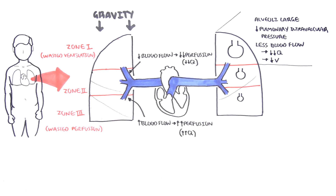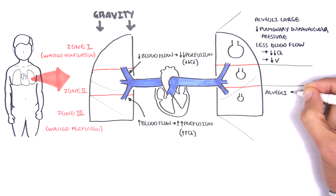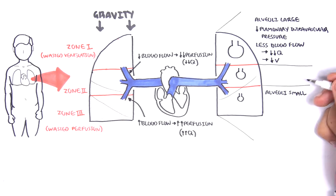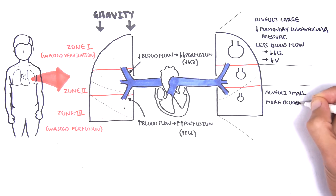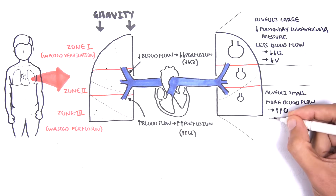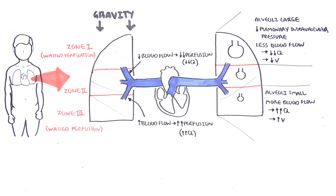As you go to the base of the lungs, your alveoli become smaller. The size differences in alveoli from the apex to the base of the lung is attributed to the difference in intrapleural pressure. You have more blood flow to the base of the lungs and so you have more perfusion. At the base of the lungs, you also have more ventilation because the small alveoli are able to expand more. However, the ventilation increase is not as much as the increase in perfusion, and thus the ventilation-perfusion ratio is lower here.